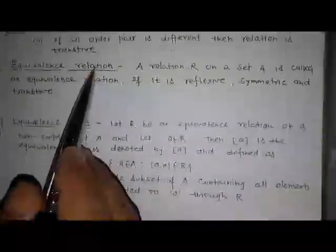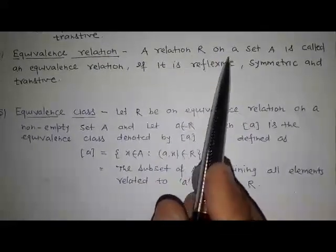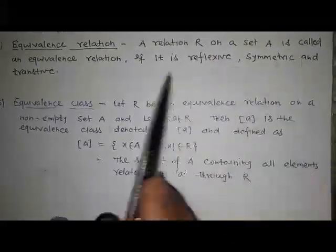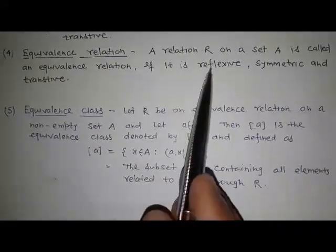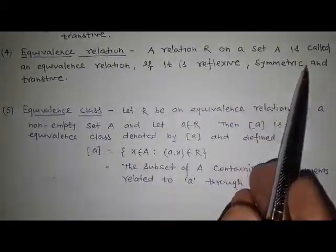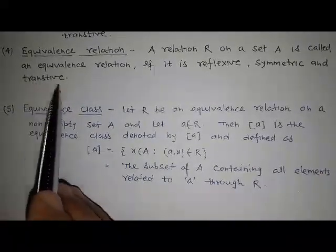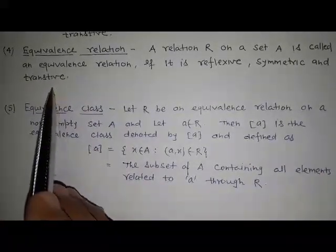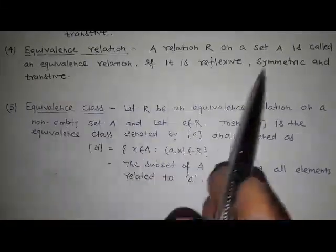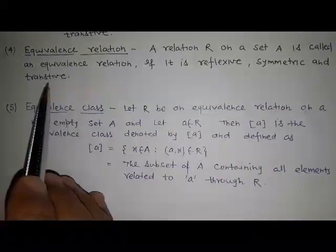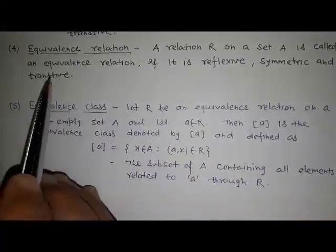Equivalence relation: a relation R on a set A is called an equivalence relation if it is reflexive, symmetric, and transitive. It means a relation is said to be an equivalence relation if it holds all three properties: reflexive, symmetric, and transitive.